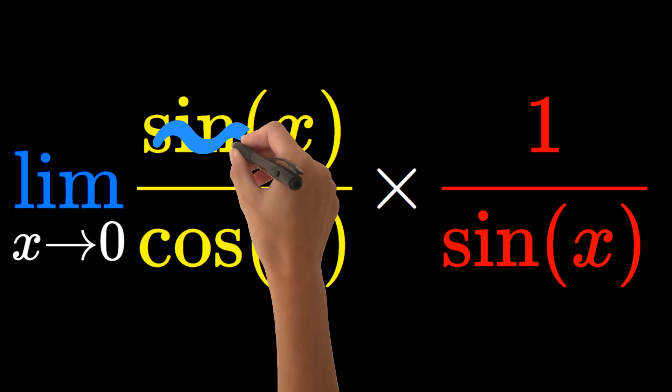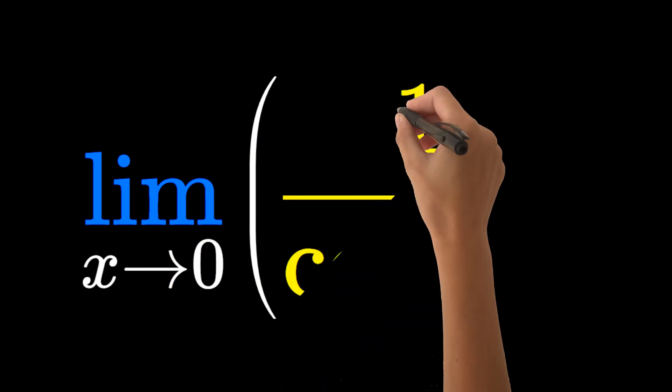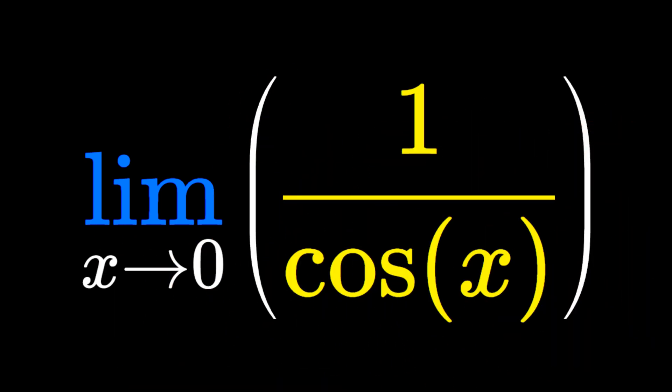Now we cancel the sine in the numerator with the sine in the denominator. This leaves us with only the limit as x goes to 0 of 1 over cosine x.